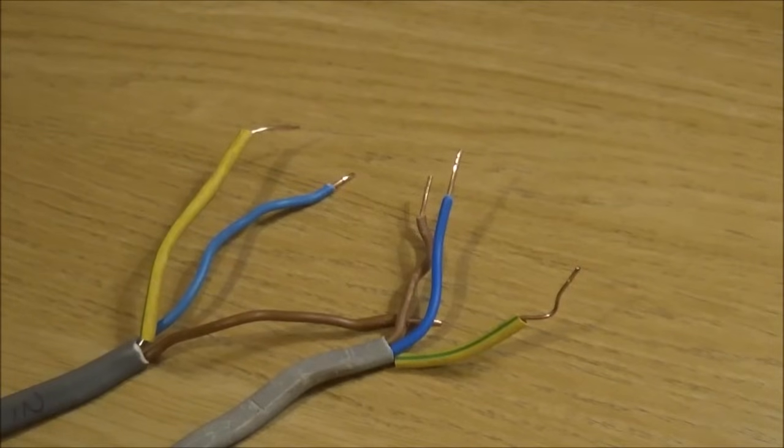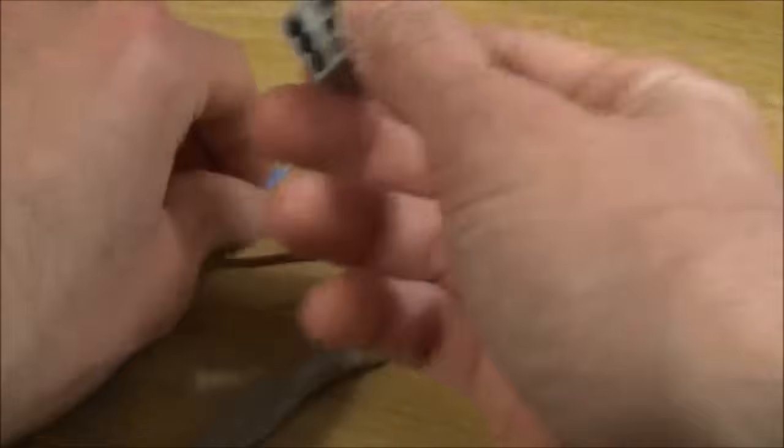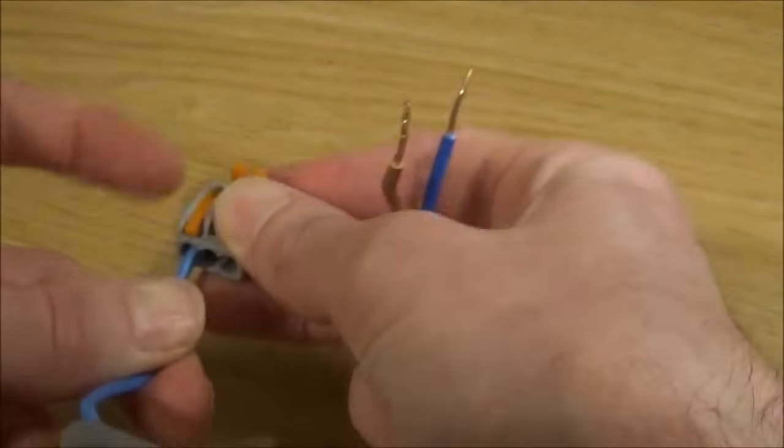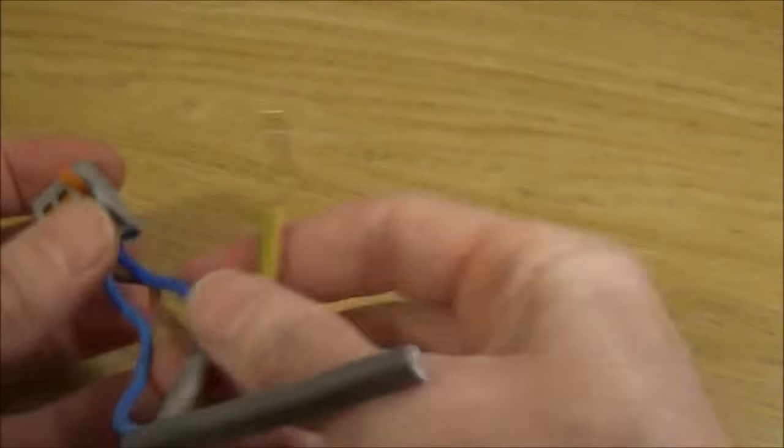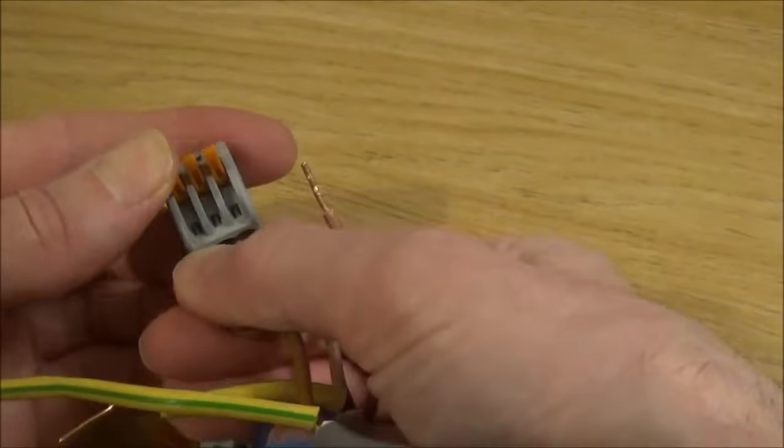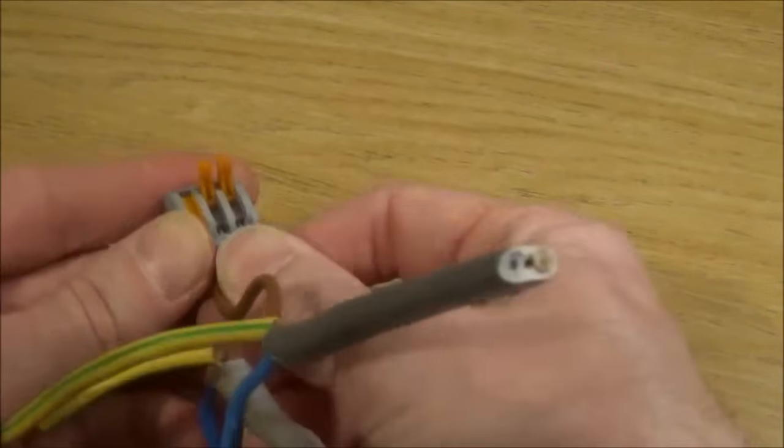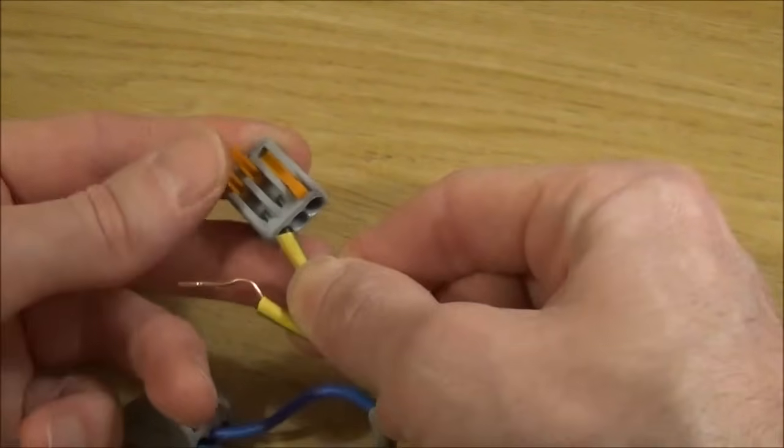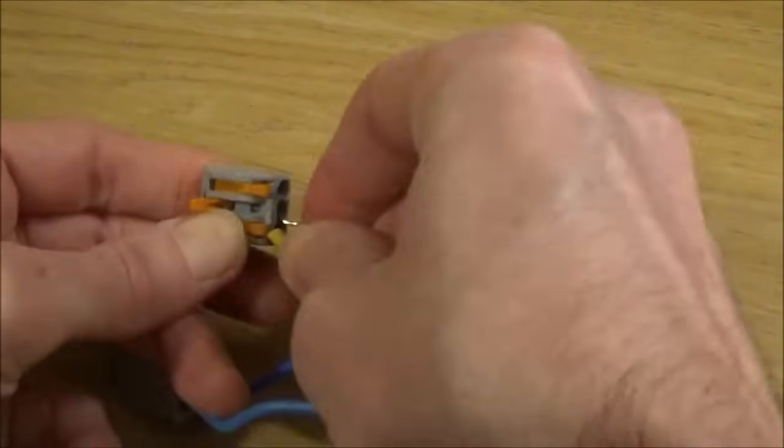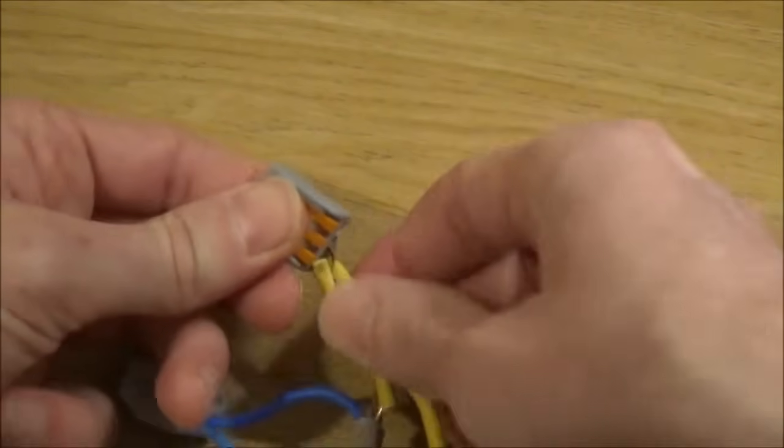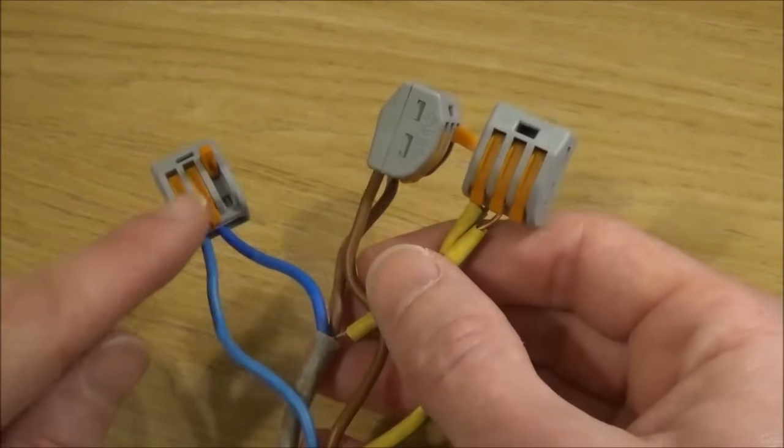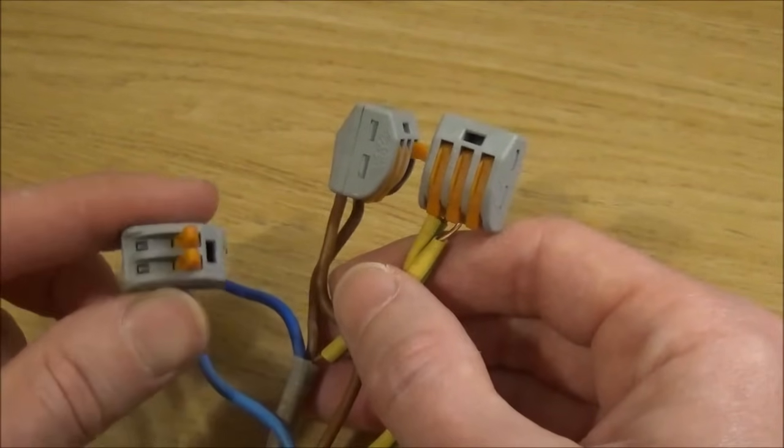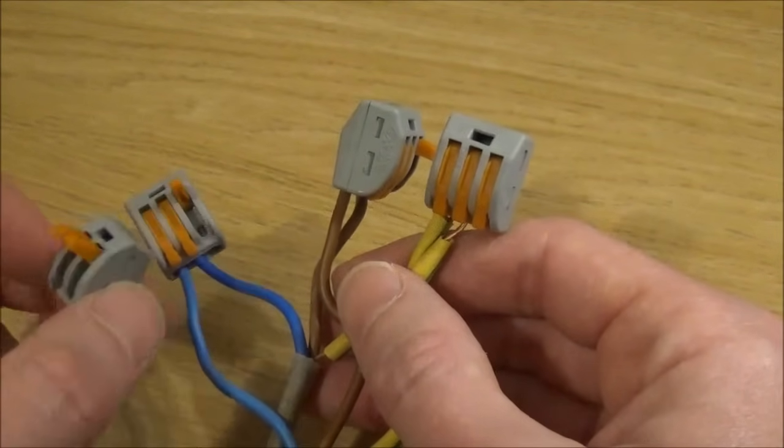Let's just say for example you've got a junction box and you just want to connect two lengths of cable together. Very simply just take the connector block, put all your neutrals together. Push your lives together and push your earths together. Obviously if you only need two terminals in each block you can use the one with two levers instead of three. It's entirely up to you.